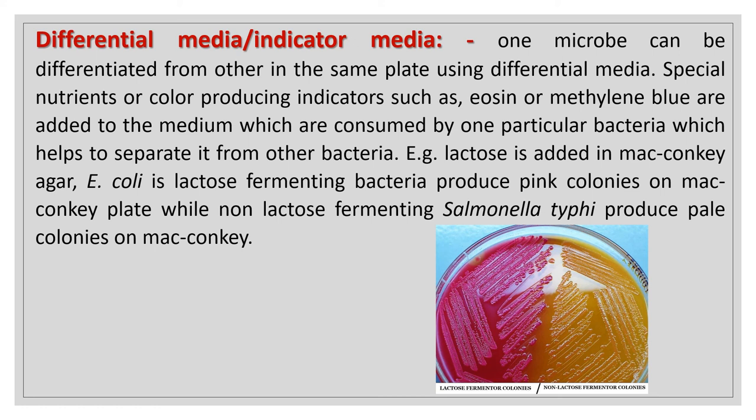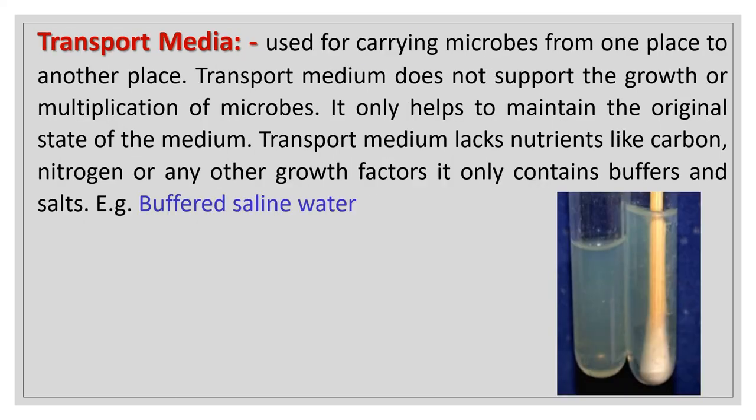Differential media, or indicator media: one microbe can be differentiated from another on the same plate. Special nutrients or color-producing indicators such as eosin or methylene blue are added, which are consumed by one particular bacteria to separate it from others. For example, lactose is added in MacConkey agar. E. coli, being a lactose-fermenting bacteria, produces pink colonies, while non-lactose-fermenting Salmonella typhi produces pale colonies on MacConkey agar.